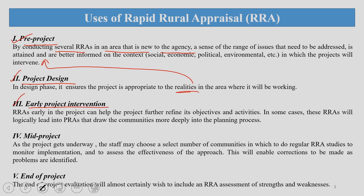Third is early project intervention — conducting RRA early in the project can help leaders to further refine objectives or re-channel efforts to fulfill the project's goals. In some cases these RRAs will logically lead to PRA, which is a more detailed analysis that draws communities more deeply into planning processes. Next is mid-project appraisal: as the project gets underway, staff involved may choose to select a few community members, visit them regularly and interact to assess the effectiveness of the approach.